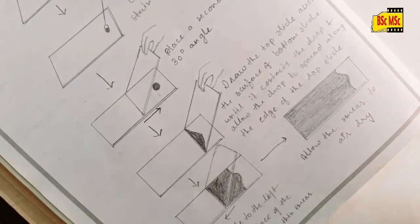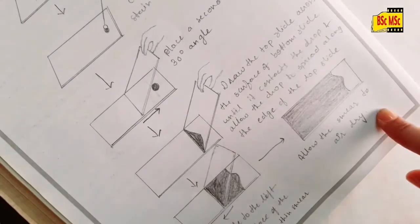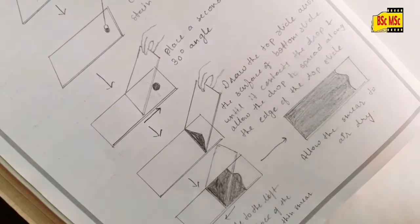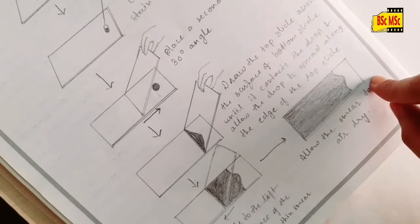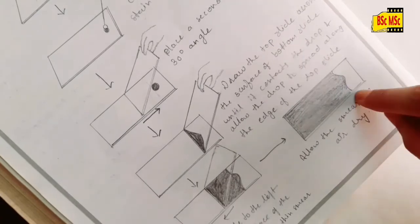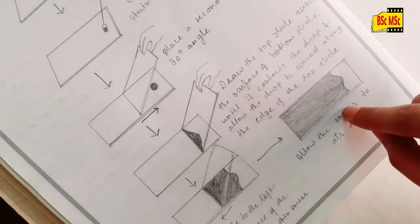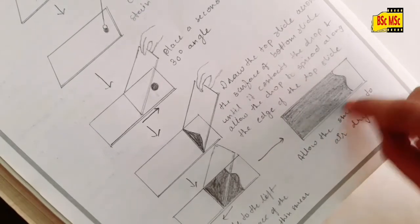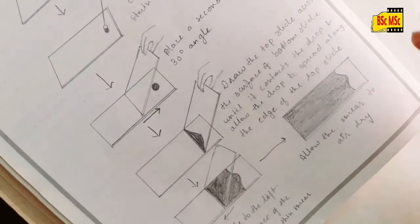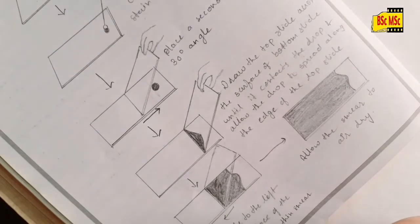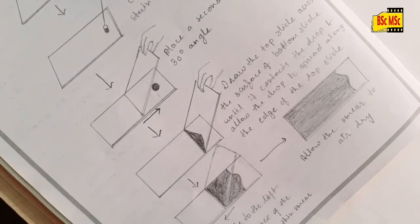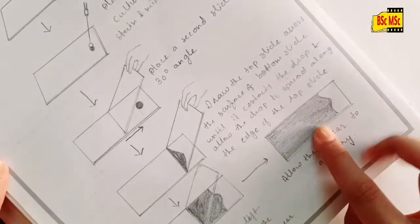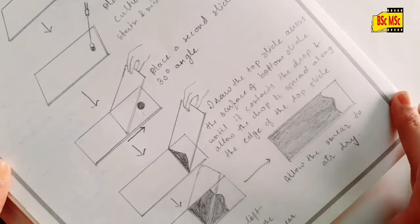When we do negative staining, because the dye is negatively charged and bacterial cells are also negatively charged, that's why under microscope the bacterial cell morphology appears transparent. Now you need to observe under microscope.